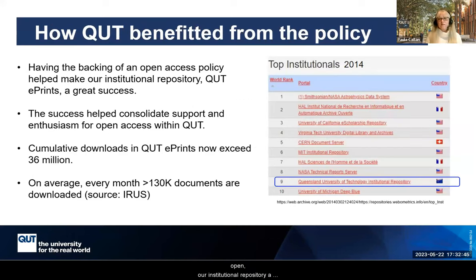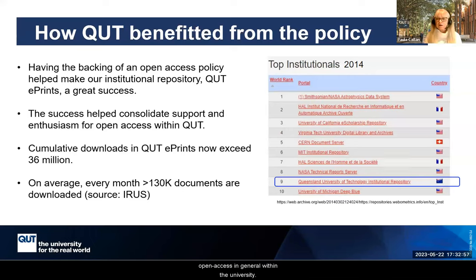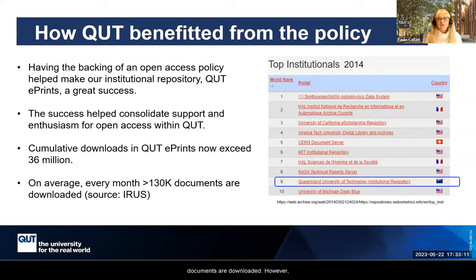Having the backing of an open access policy has certainly helped to make our institutional repository a great success, and the success of the repository helped consolidate support and enthusiasm for open access in general within the university. The cumulative downloads from QUT ePrints now exceed 36 million, and on average every month more than 130,000 documents are downloaded.